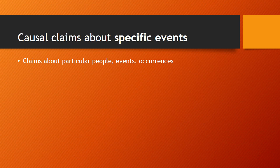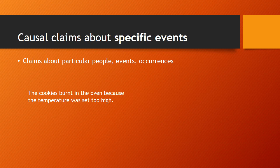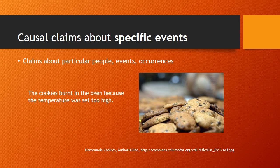First, let's talk about claims about specific events. Causal claims about specific events involve particular people, particular situations, particular events or occurrences that happen at a specific time. These are not claims of a more general sort. For example, the cookies burnt in the oven because the temperature was set too high. This is a claim about a specific event occurring, namely these exact cookies burning in a particular oven at a particular time.